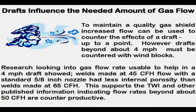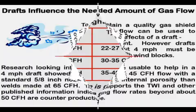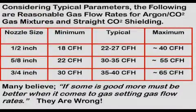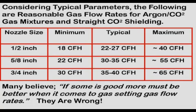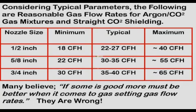Considering the many parameters that affect quality shielding, this table provides the range of shielding gas flow that should be considered when MIG welding. An additional factor is also important: if adequate extra gas is provided at weld start at a maximum flow rate that prevents excess turbulence, a lower steady-state flow rate can be used. Our gas saver system provides this extra start gas at a controlled peak-flow-limited rate, potentially allowing lower steady-state flow rates. Unfortunately, many folks believe if some gas is good, more must be better — they are mistaken.